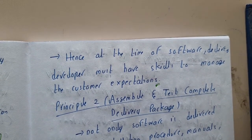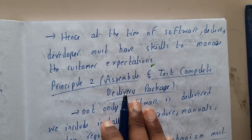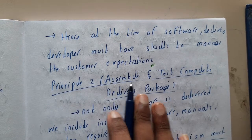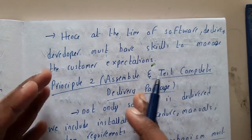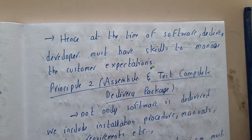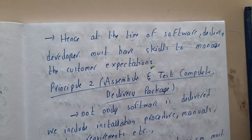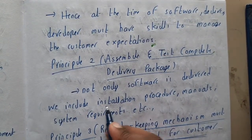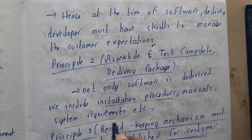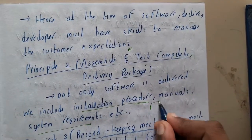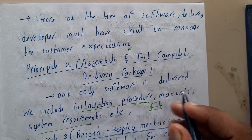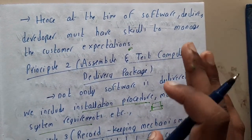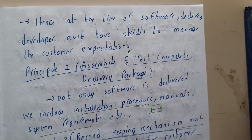The second principle is: assemble a complete testing and delivery package. You need to assemble all the things, do complete testing, and deliver the package. Not only software is delivered — we should also deliver installation manuals, procedures, and system requirements. When you download software, there are terms and conditions and many things, and the company is responsible for delivering a full-fledged software with customer manuals.